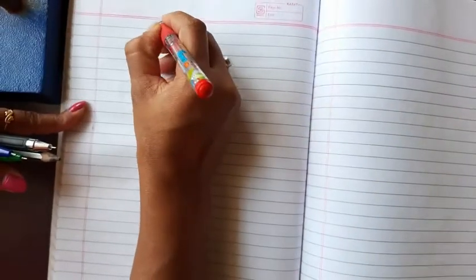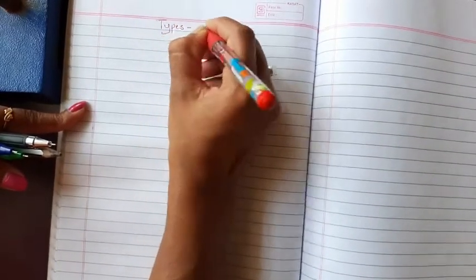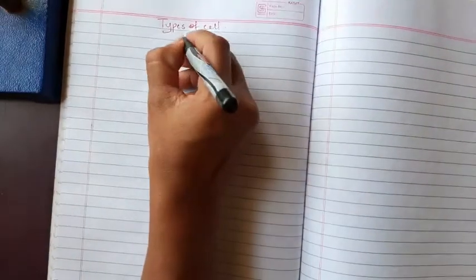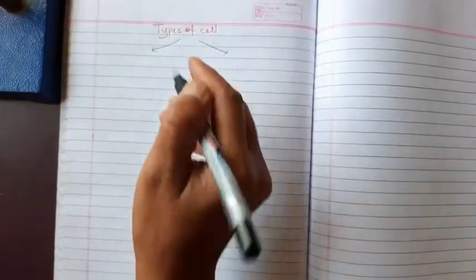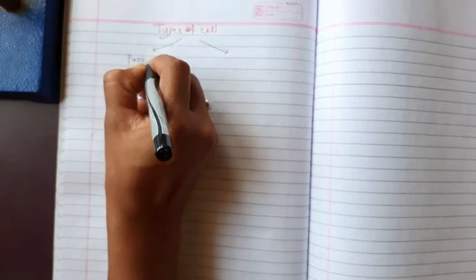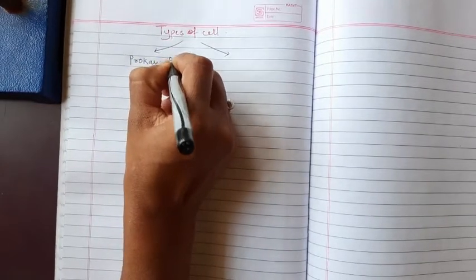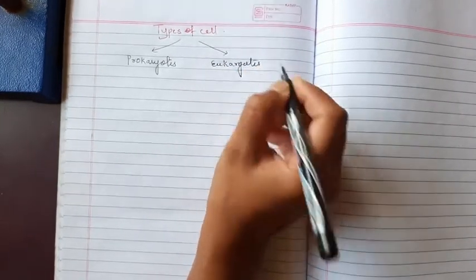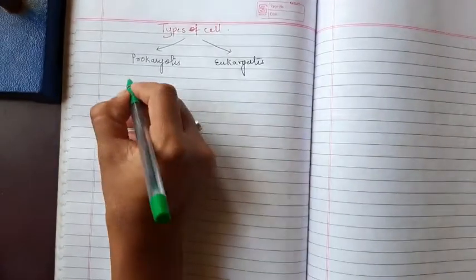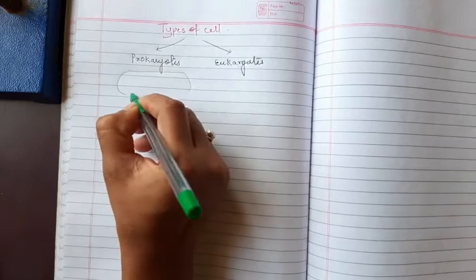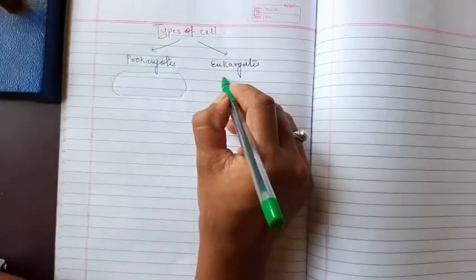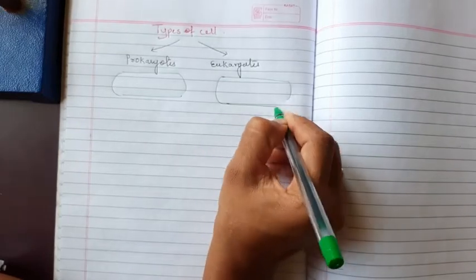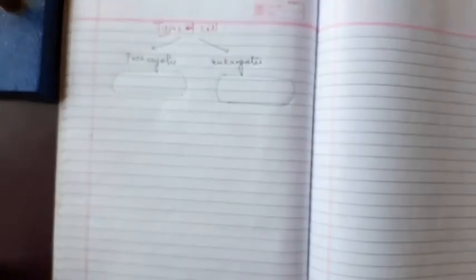In the last class we also discussed about types of cells. There are two types: prokaryotes and eukaryotes. Prokaryotes are unicellular bacteria and viruses. Eukaryotic cells are the higher animals and plant cells. First we have to focus on the structure of prokaryotes.